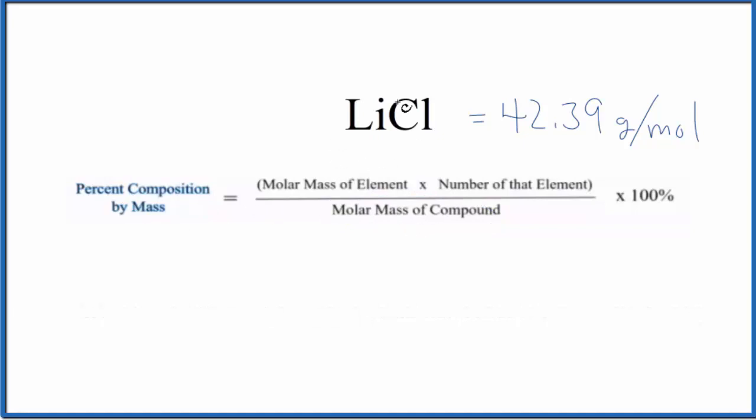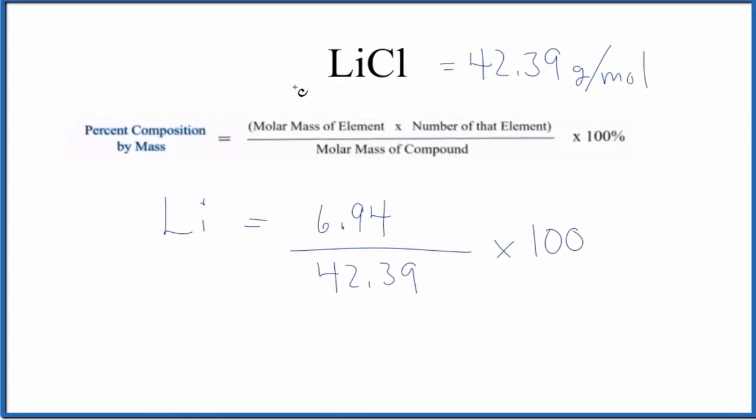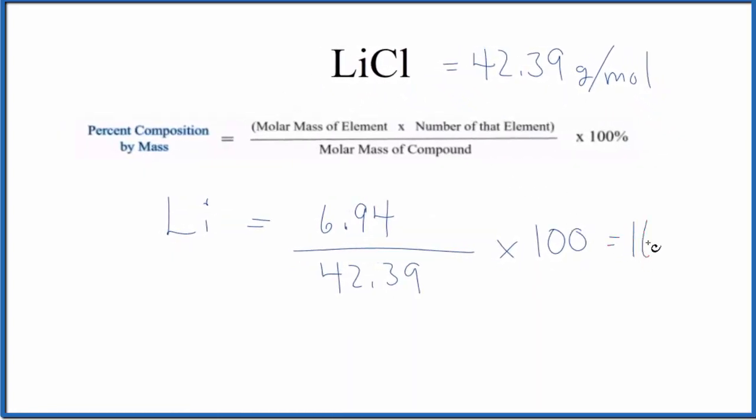Now we can just figure out the percent composition for each element. For lithium, we would say that lithium, the molar mass of lithium, that's 6.94. I'm rounding to two decimal points here. And we're going to multiply that by the number of lithium atoms. There's only one lithium atom here, so we'll just leave it as 6.94. And then the molar mass of the compound, we just found that. That's that 42.39, and both of these are grams per mole, so they'll cancel out. We multiply this by 100, and the percent composition for the lithium in the LiCl equals 16.37%.